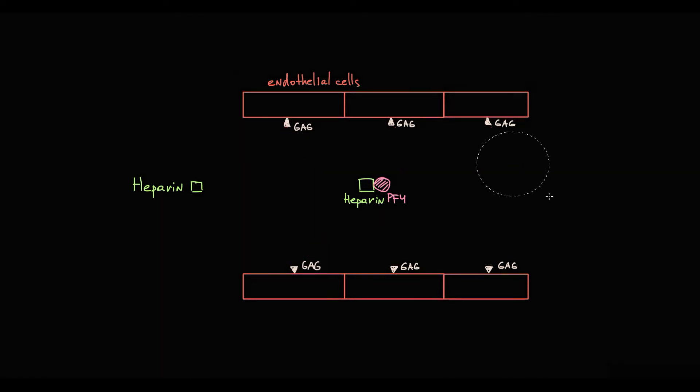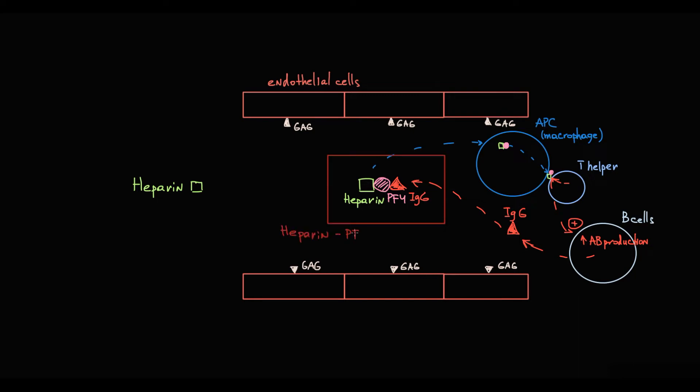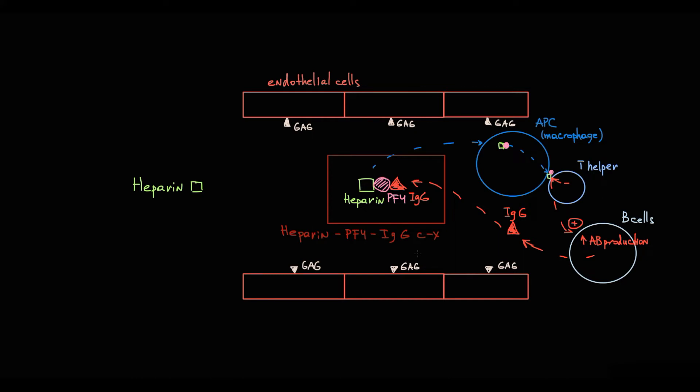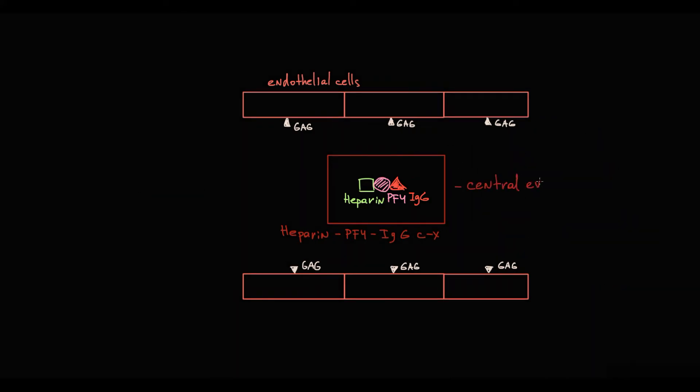When some of these complexes are taken up by antigen-presenting cells like macrophages, once macrophage presents this newly formed heparin-platelet factor IV complex to T-helpers, they recognize it as antigen and stimulate B cells to produce antibodies against heparin-platelet factor IV complex, most frequently immunoglobulin G. Once these immunoglobulin G antibodies bind to heparin-platelet factor IV complex, together they form heparin-platelet factor IV-immunoglobulin G multi-molecular immunogenic complex. The formation of this complex is the central event in heparin-induced thrombocytopenia type II. After heparin injection, heparin binds to platelet factor IV and forms heparin-platelet factor IV complex. This complex provokes immune response that results in production of immunoglobulin G, with subsequent formation of heparin-platelet factor IV-immunoglobulin G complex.